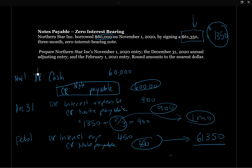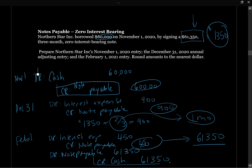That makes sense, because the next thing we're going to do in February is pay back the note. We need to take the note payable off our balance sheet, so we debit note payable $61,350 and credit cash $61,350. Now we've got the entire liability cleared out, and we've got $1,350 going through our income statement as interest expense.